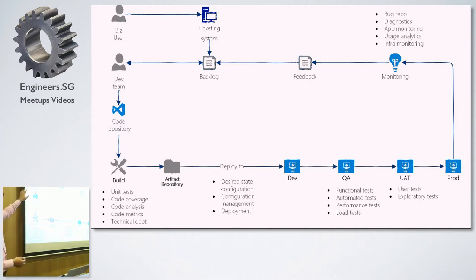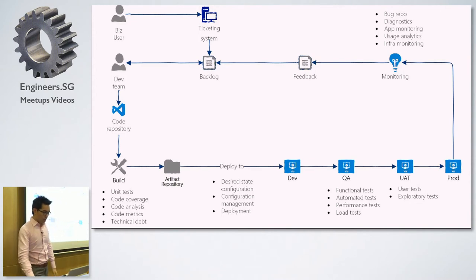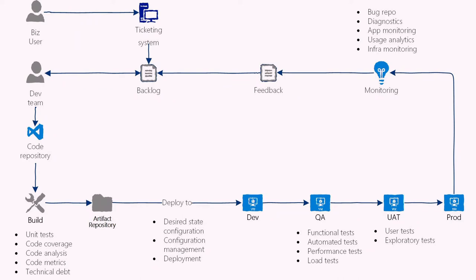First, we look at the business user. In many organizations there's an internal help desk or ticketing system where they can raise requests, submit a change request, or report a bug. That system is integrated with Team Services, where it comes down to the backlog and the dev team picks it up, starts working on the change request, checks code in, and triggers a build. Within the build portion, you can do unit testing, code analysis, and technical debt tracking as your application is being built.